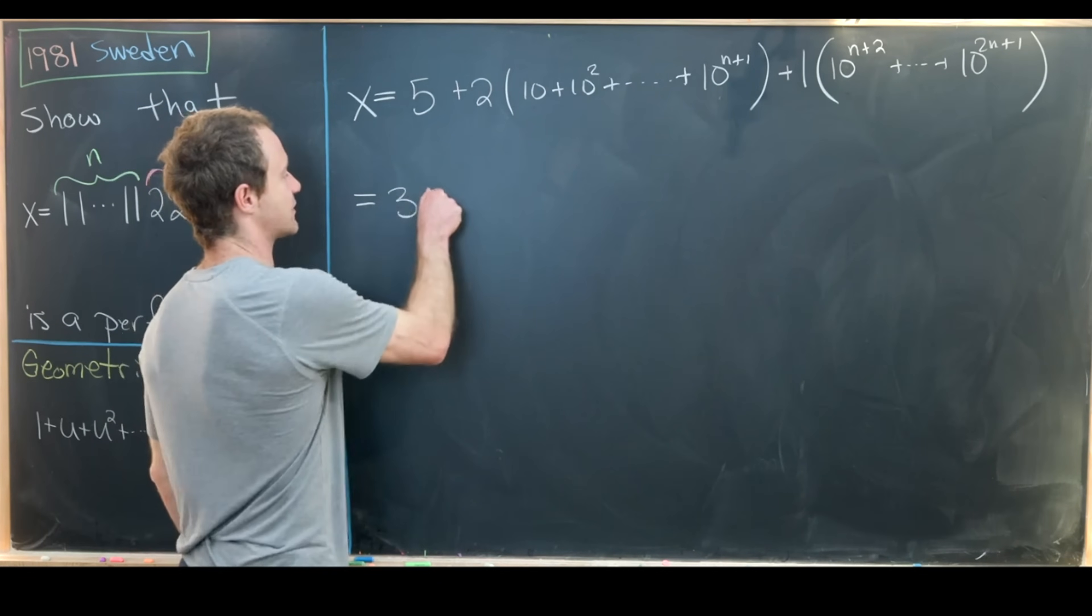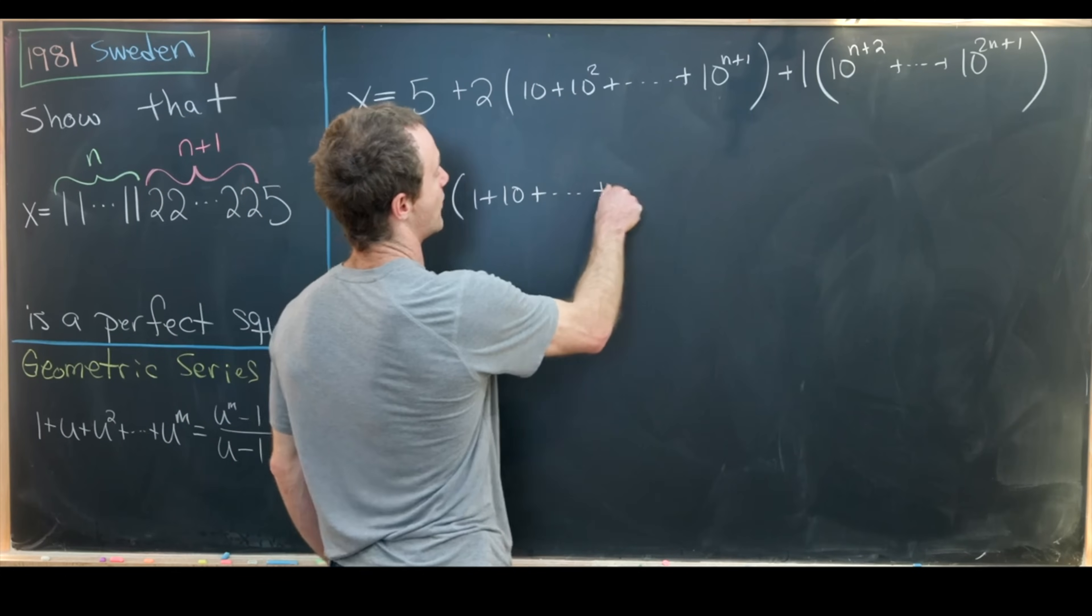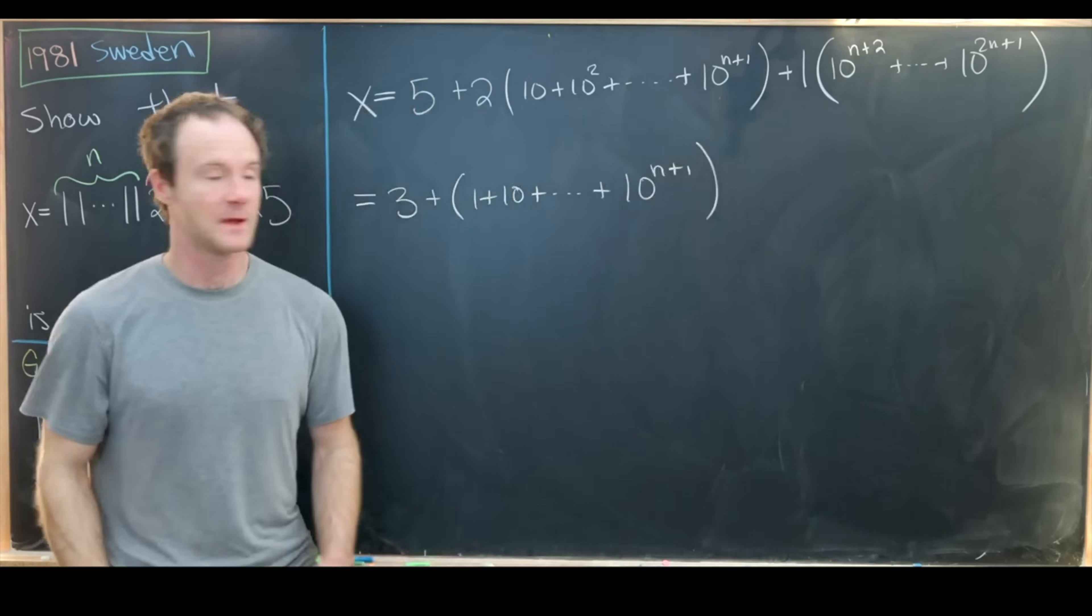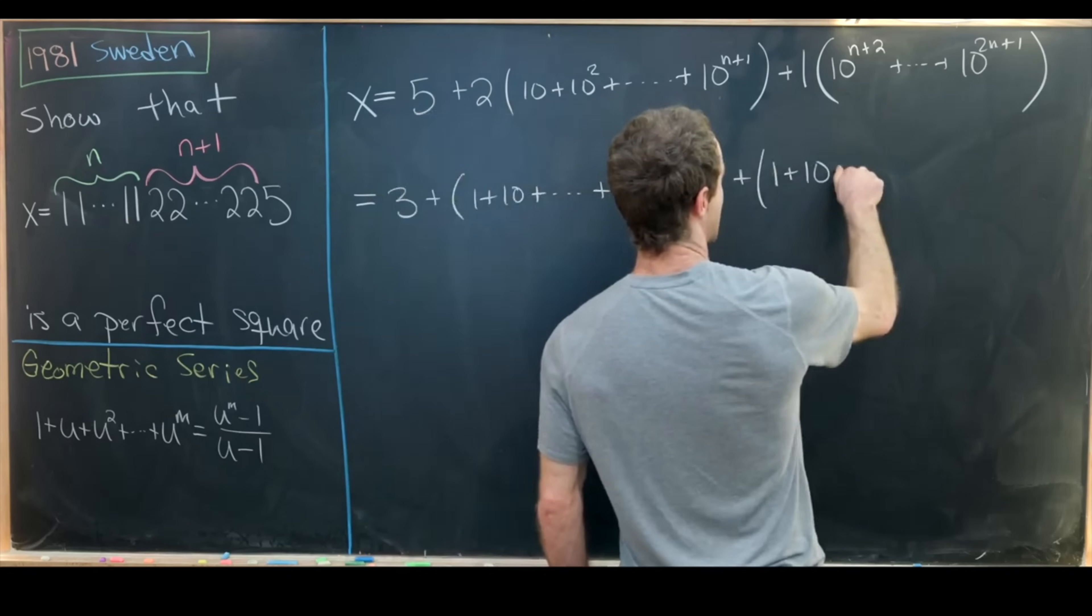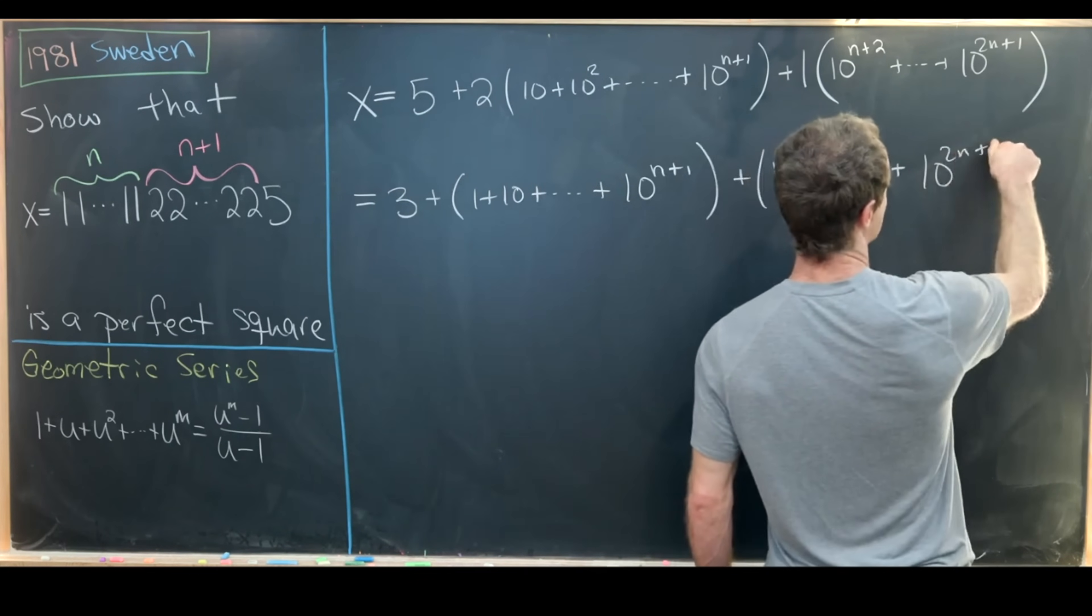Furthermore, we'll break this 5 into 3+1+1 for the same reason. So that's going to give us 3 + (1 + 10 + ... + 10^(n+1)) and then plus (1 + 10 + ... + 10^(2n+1)).